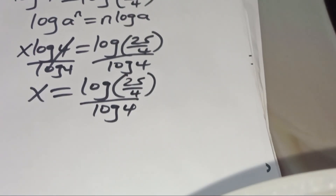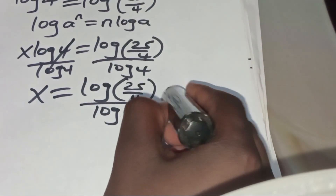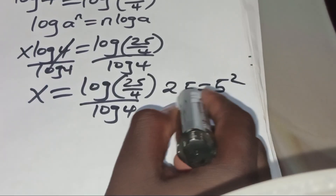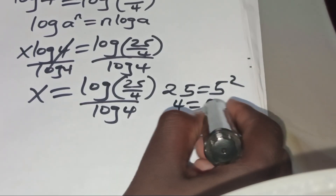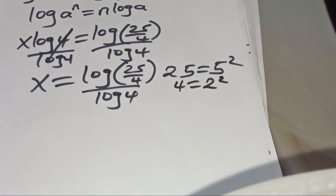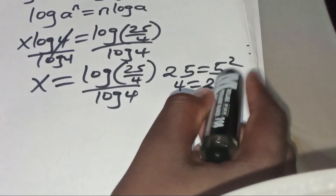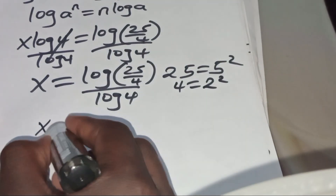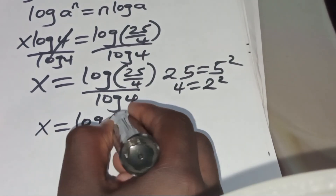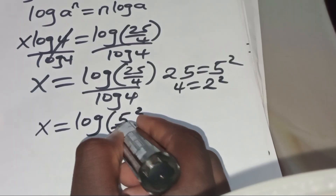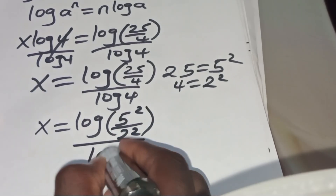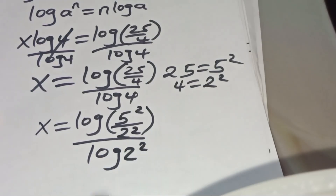Now, from what we have here, we can express 25 as 5 to the power 2, and 4 can be expressed as 2 to the power 2. So substituting this, we'll have x equal to √(5² divided by 2²), divided by √(2²).